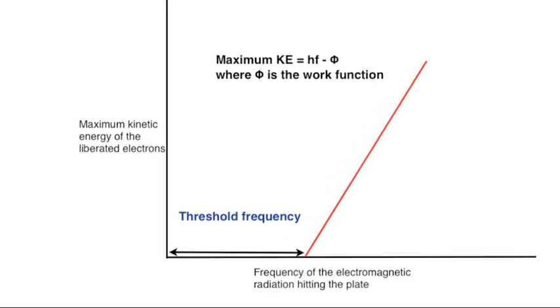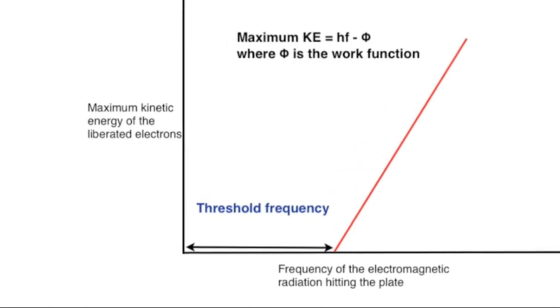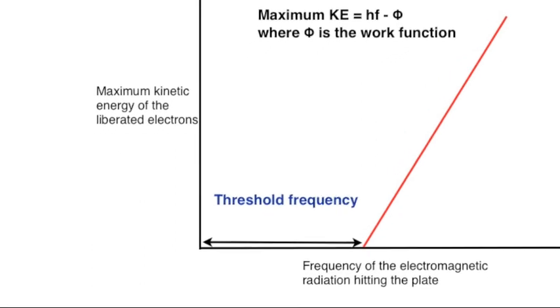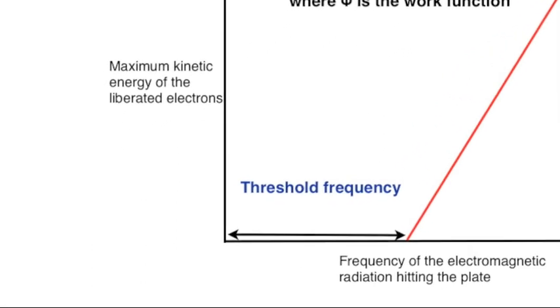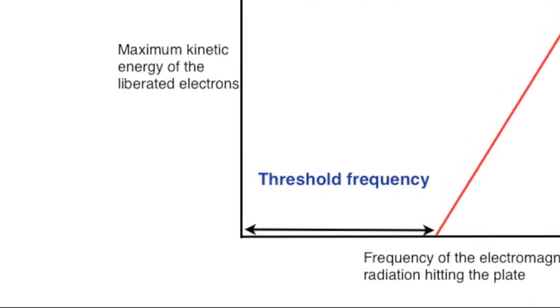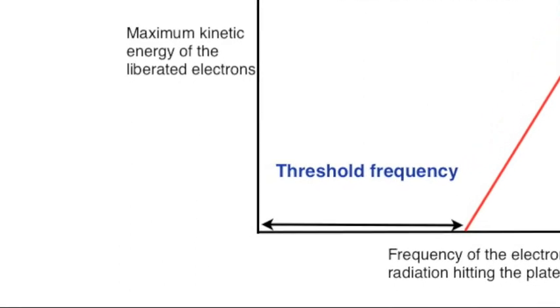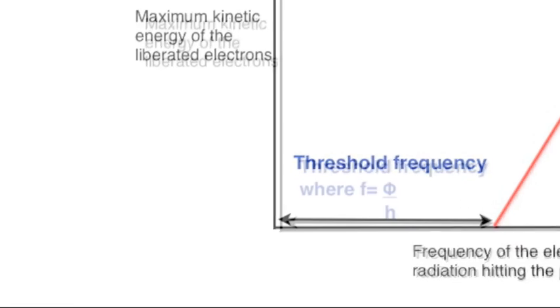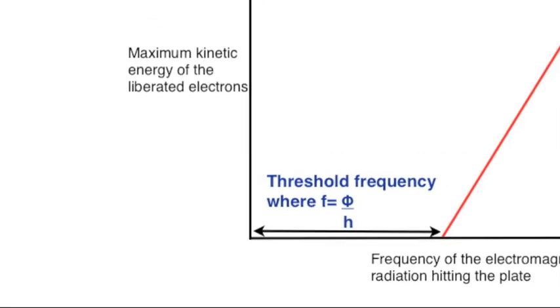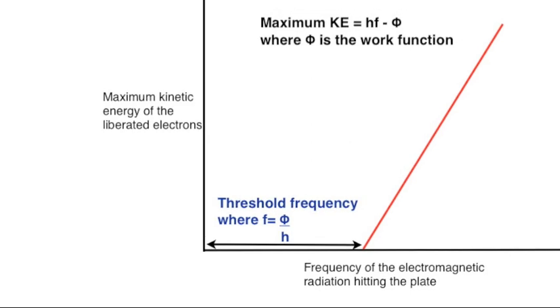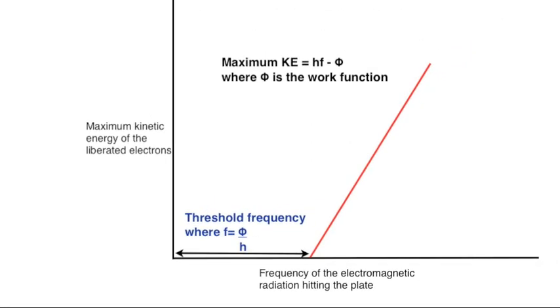The intersection on the x-axis marks the photons at the threshold frequency. The photons at this frequency have just sufficient energy to lift the electron off the surface. At that point, the energy of the photon HF equals phi. If we rearrange that, then frequency is phi over H.